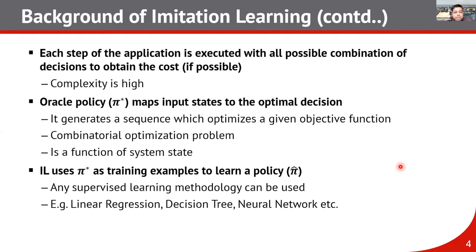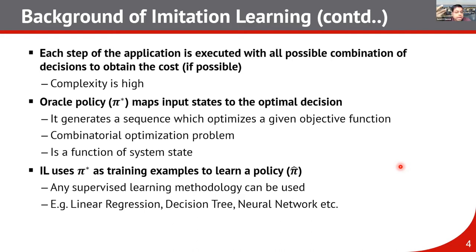Given this oracle policy, imitation learning trains a policy which approximates the oracle policy. The primary reason we need to learn the oracle policy is that we cannot compute it every single time, as we may not have the storage, latency, or energy budget to do so. The IL policy uses the oracle to make an approximate policy, and any supervised learning method can be used — linear regression, neural networks, etc.